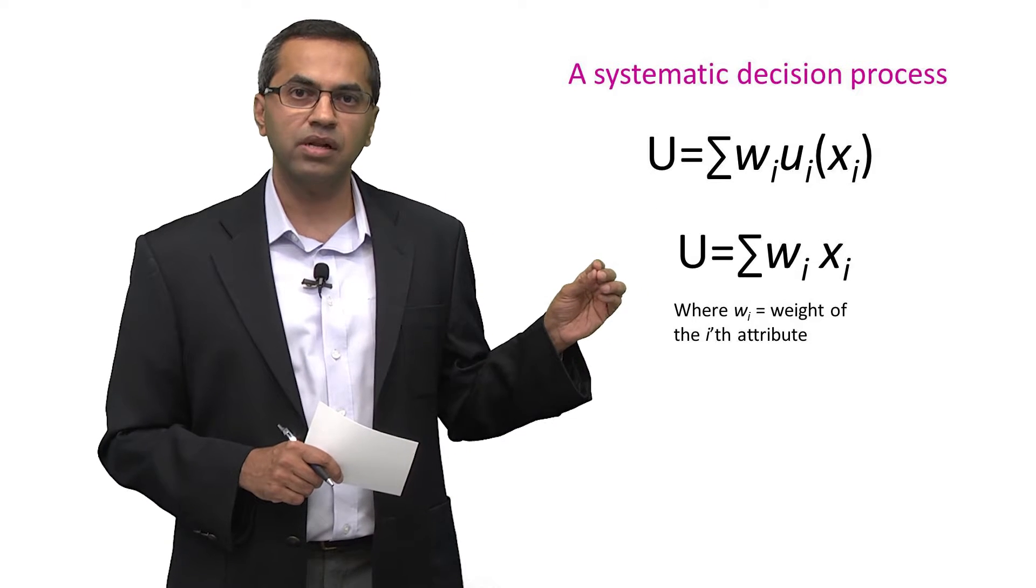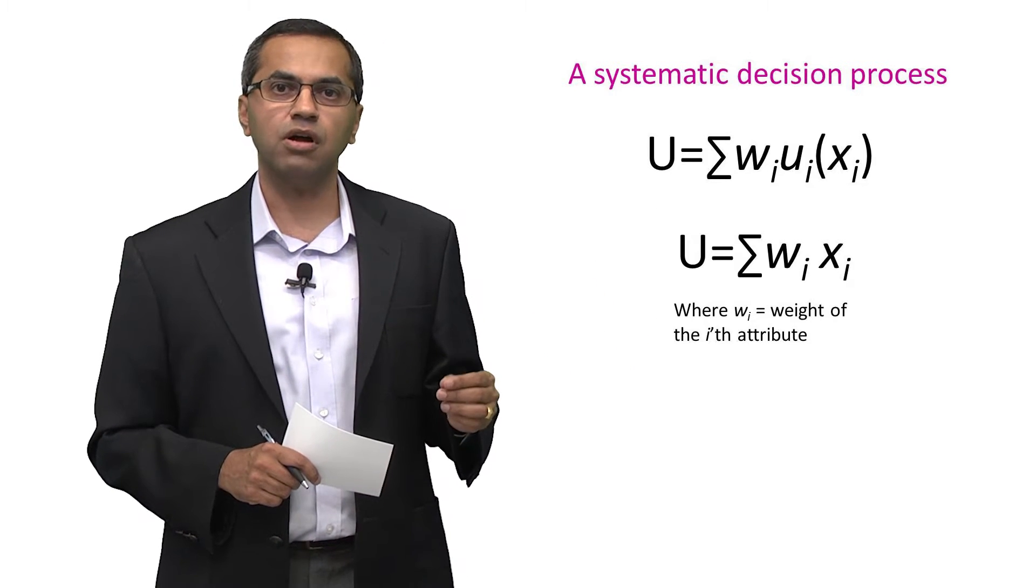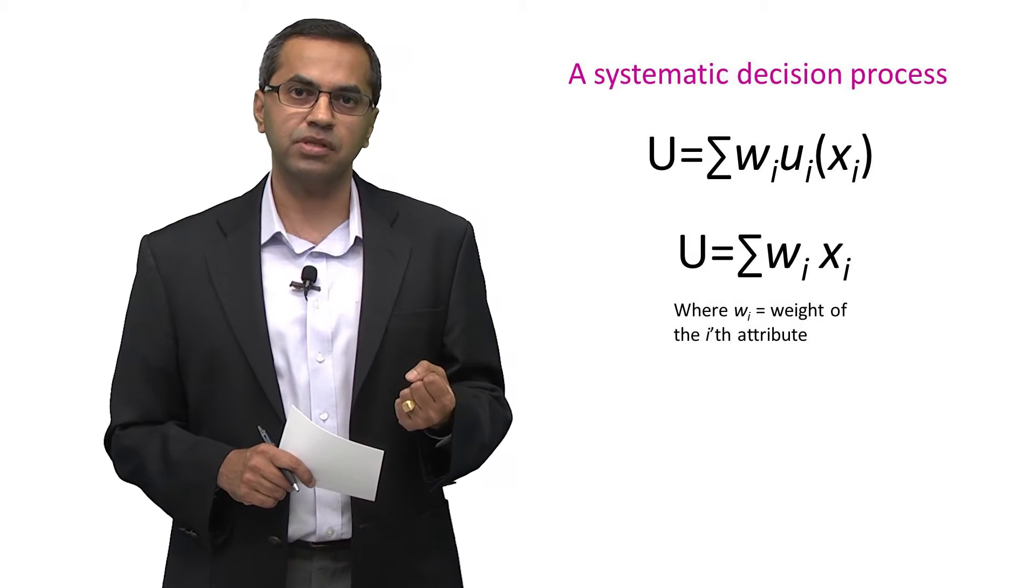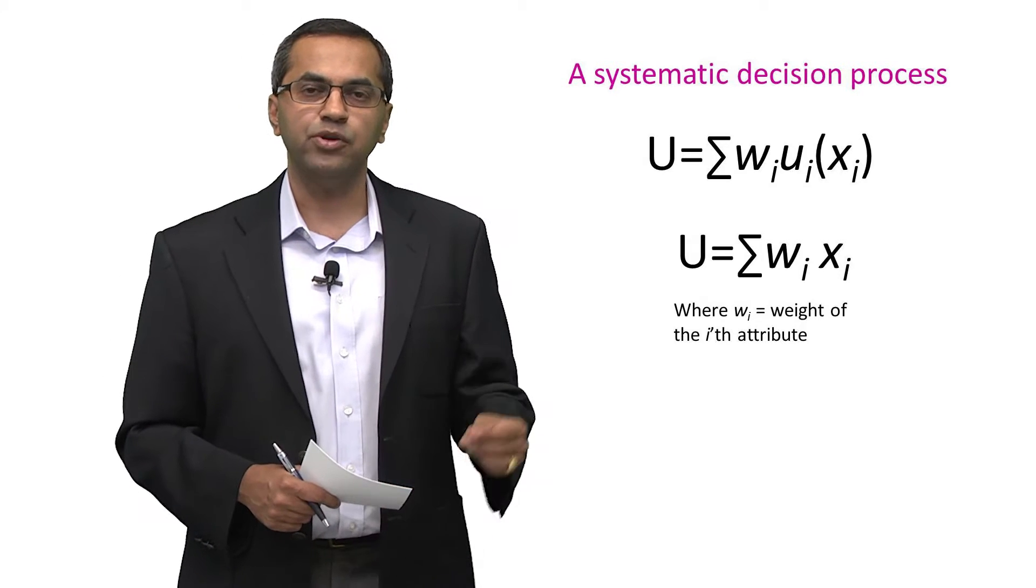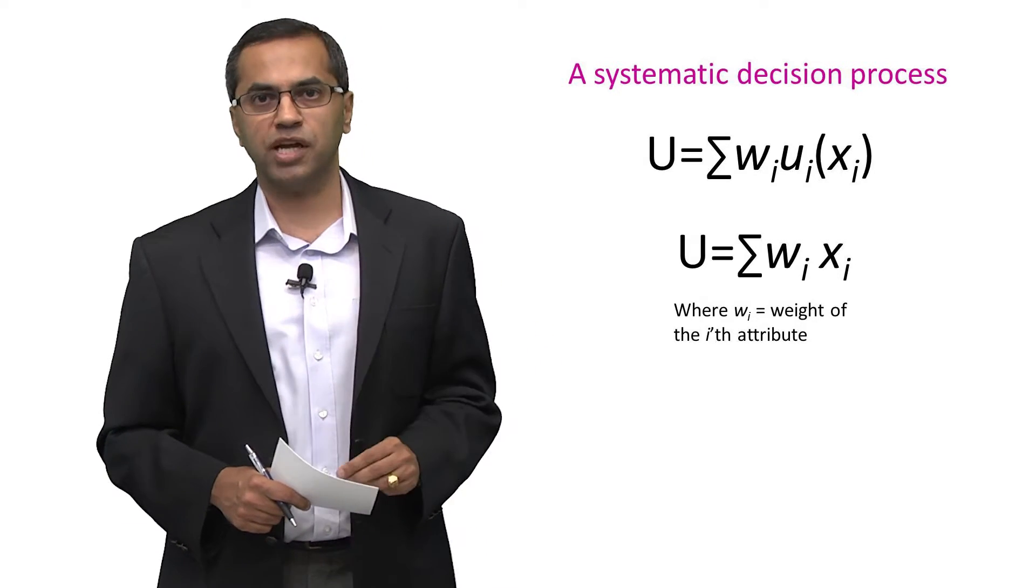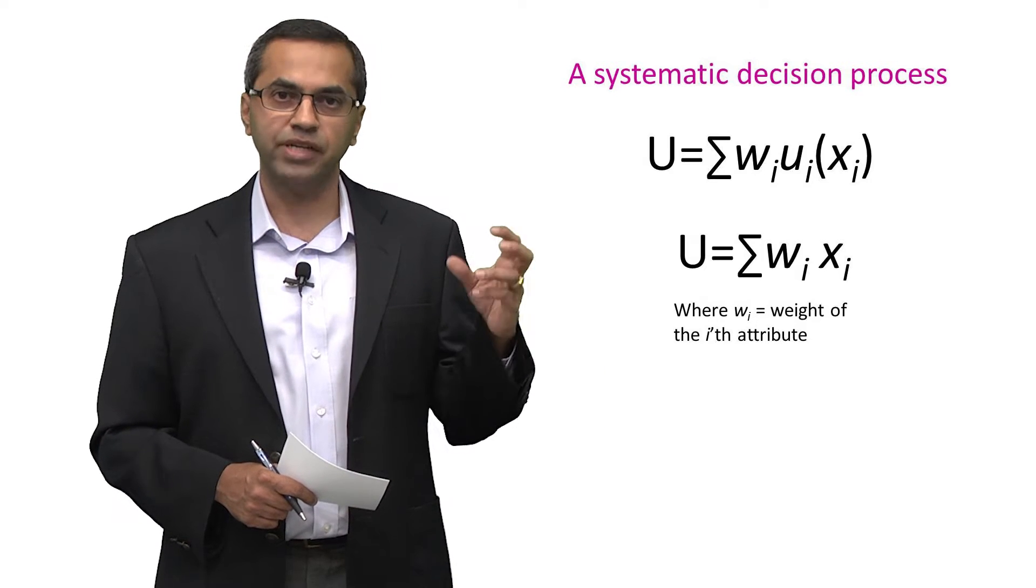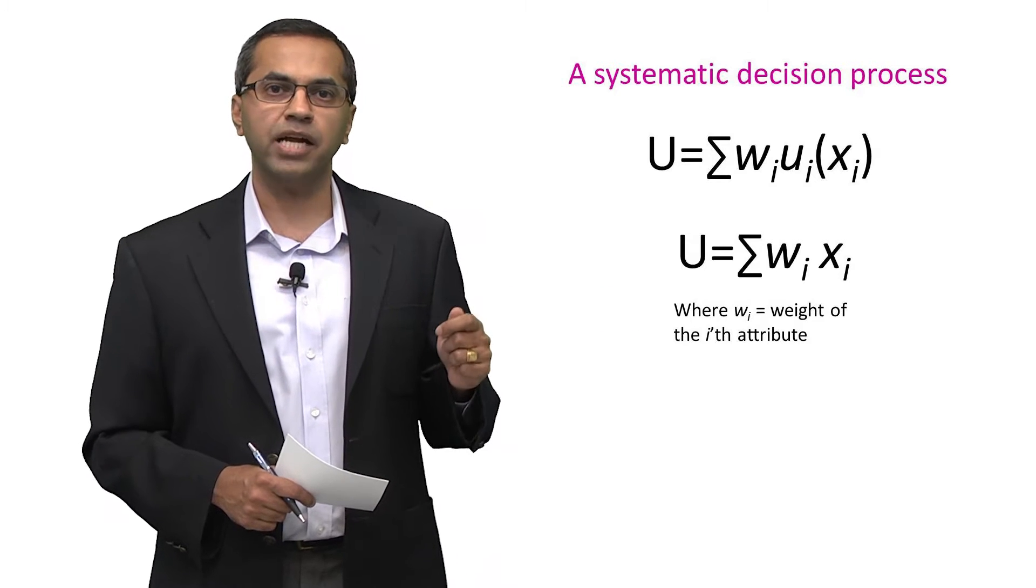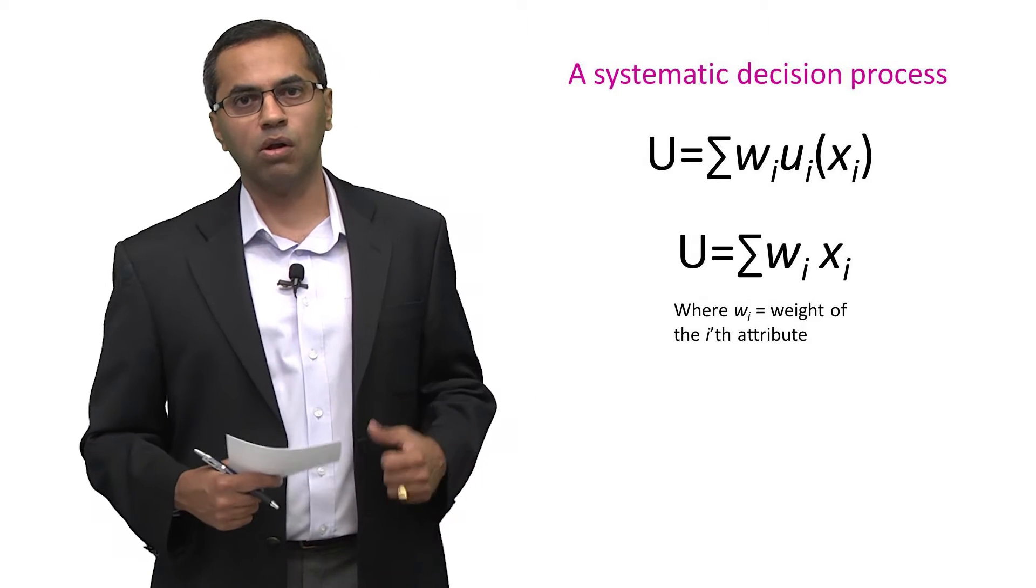We said that the utility of a given option or product is a function of the combined utility delivered by each of its attributes. In particular, if you can decompose a product into multiple attributes and assess the importance of each, then the utility is the sum of w, the weighting you place on a given attribute, multiplied by the utility of that attribute, added across all the attributes.